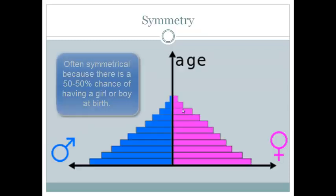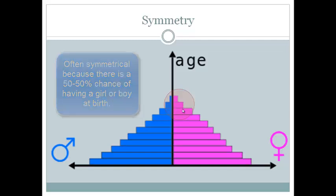Symmetry on a population pyramid is often the same. However, sometimes asymmetrical features do occur. For example, when considering the older people in the population, you'll notice that the females are living longer than the males.